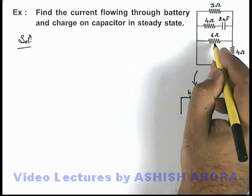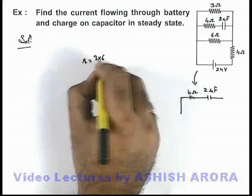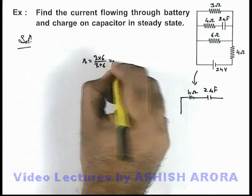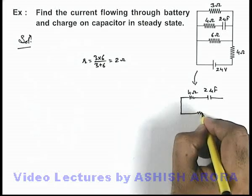And here this 3 ohm is in parallel with 6 ohm, then the equivalent resistance will be 3 into 6 by 3 plus 6. That will be 2 ohms. So here we can connect this 2 ohm resistance.